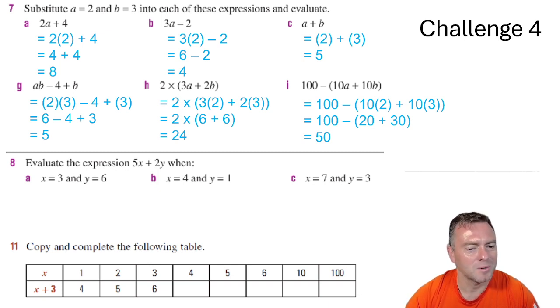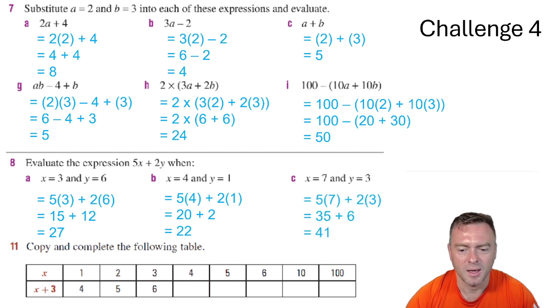This one we've got the same expression with different inputs. So this time we're going to do 5 lots of 3 plus 2 lots of 6 which gives you 27. The next one we've got 5 lots of 4 plus 2 lots of 1 which then gives you 22.